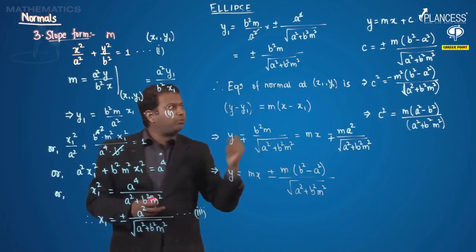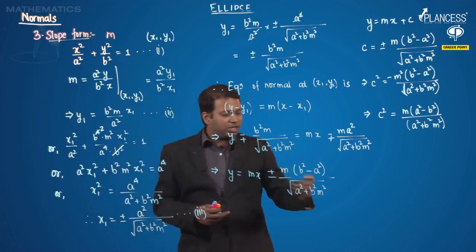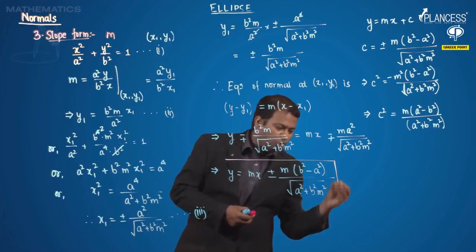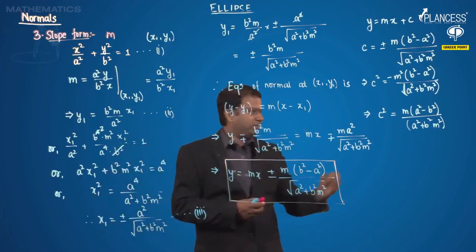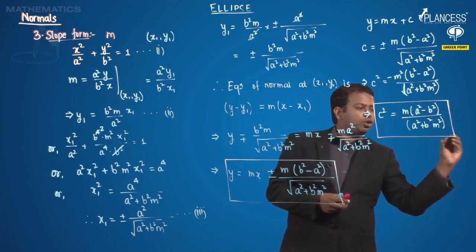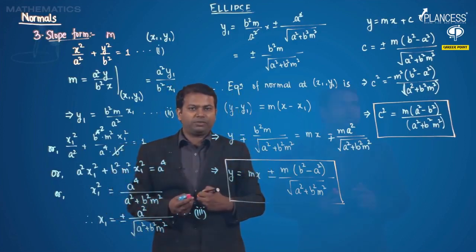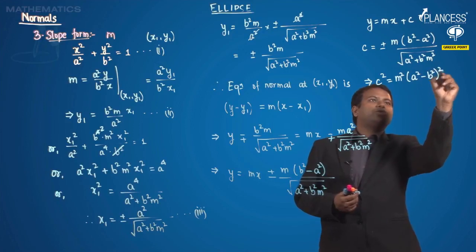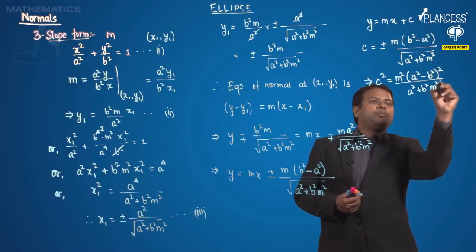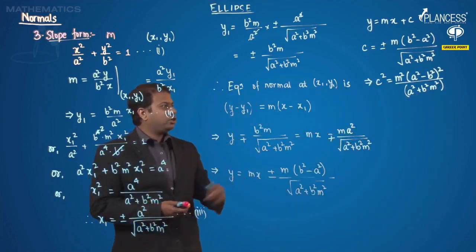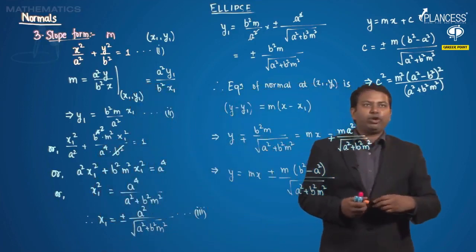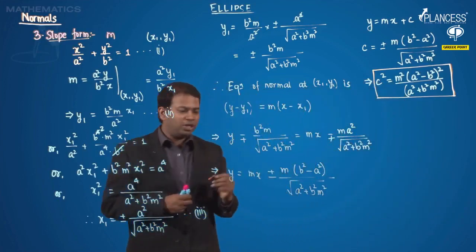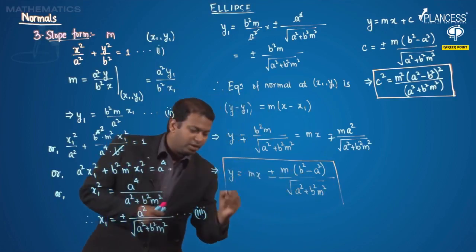So this is how any line that is supposed to be a normal must have its y-intercept satisfying this particular relation. The equation of the normal in the general slope form follows this equation. This gives us c² = m²(a² − b²)²/(a² + b²m²), showing how c is related to m, a, and b. Any line y = mx + c will be a normal to the ellipse if and only if it satisfies this particular relation.